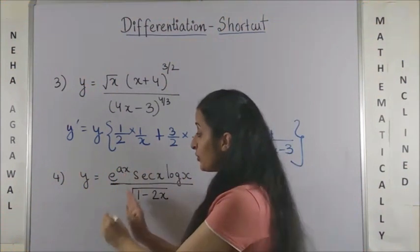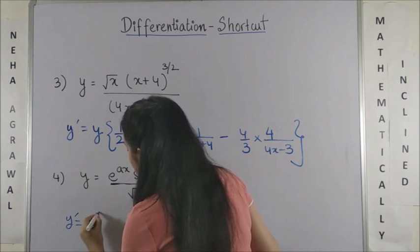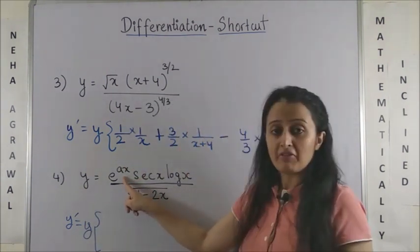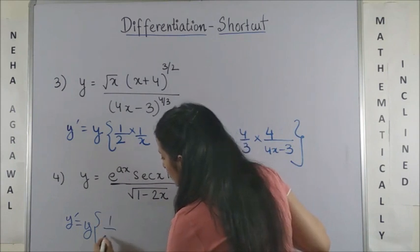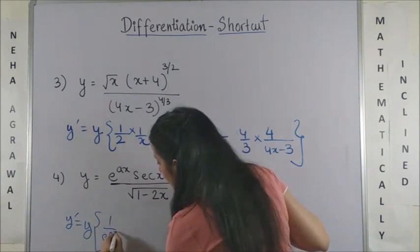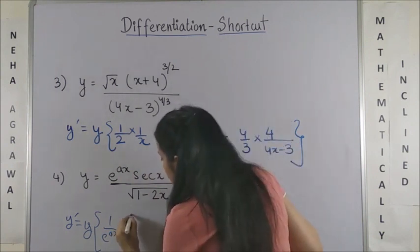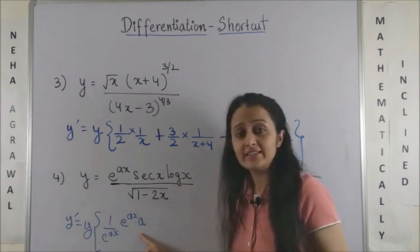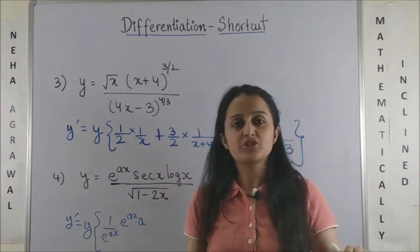Similarly, going on to the fourth one. Again, my y' would be y times... now please see, there is no power with e^(ax) as such, so I write it as 1/e^(ax). Now the derivative for e^(ax) is e^(ax) into a. Why did I get this a? Well, it's chain rule. If you don't follow what is chain rule, don't forget to watch my video on product, quotient, and chain rule.